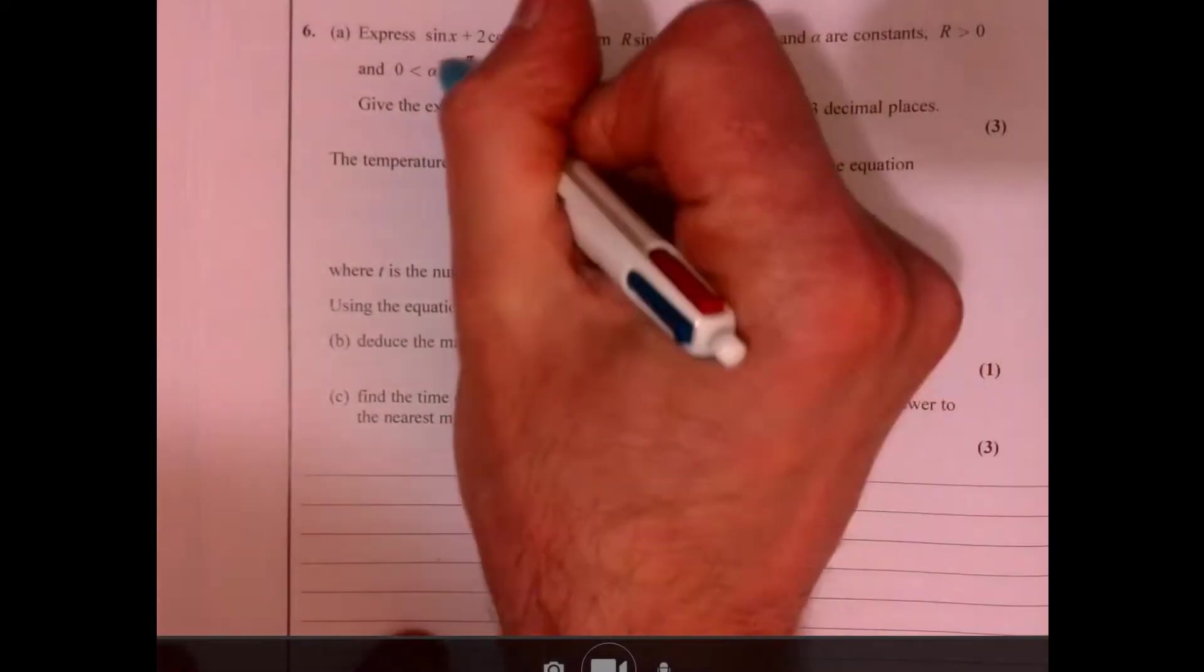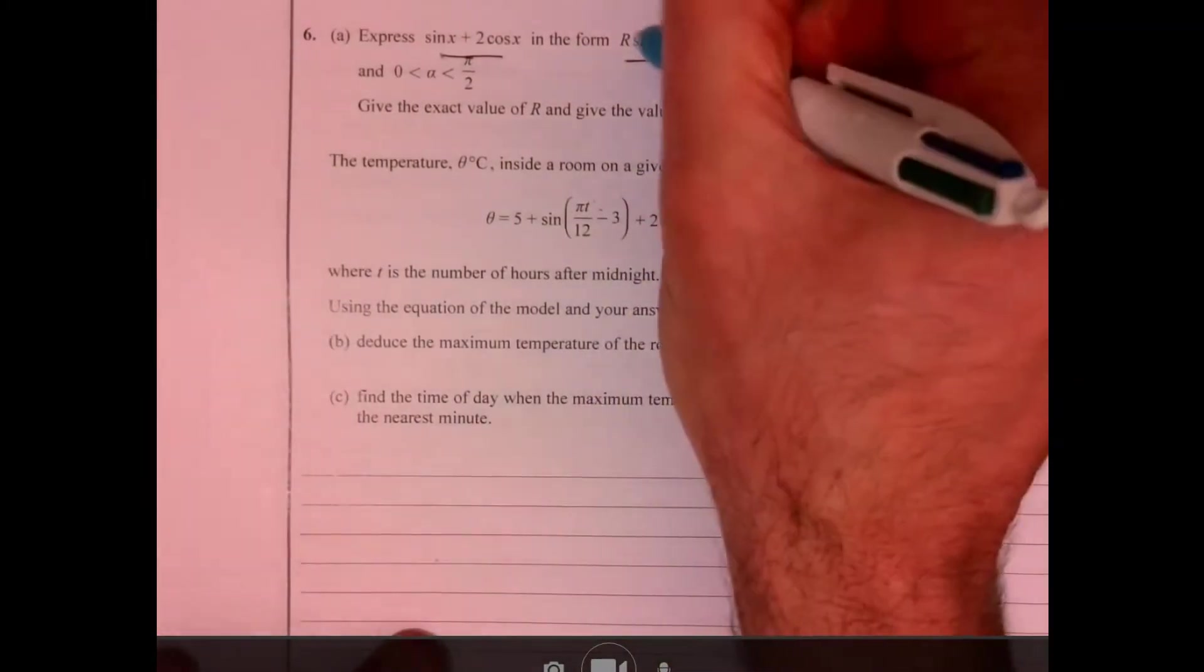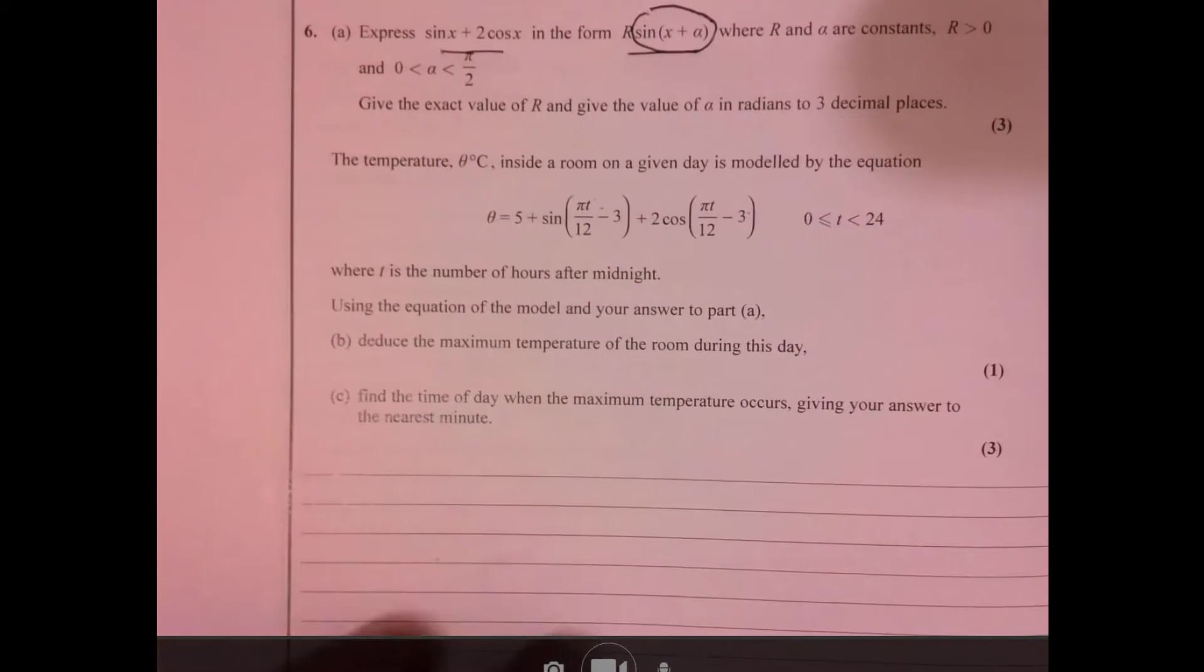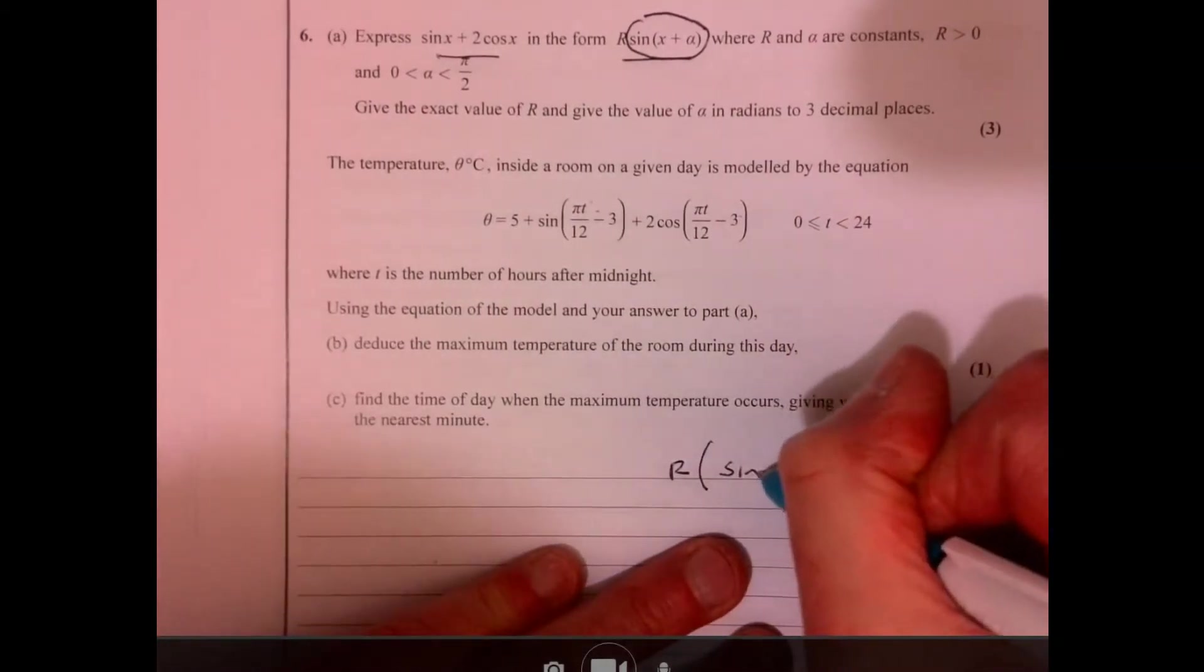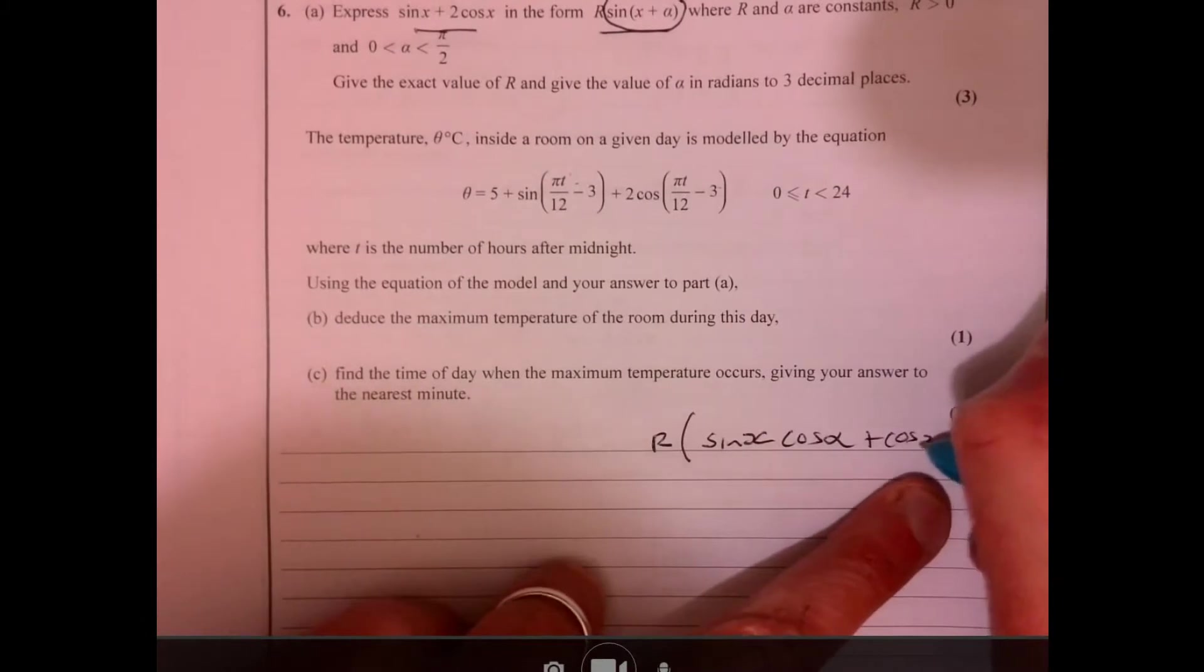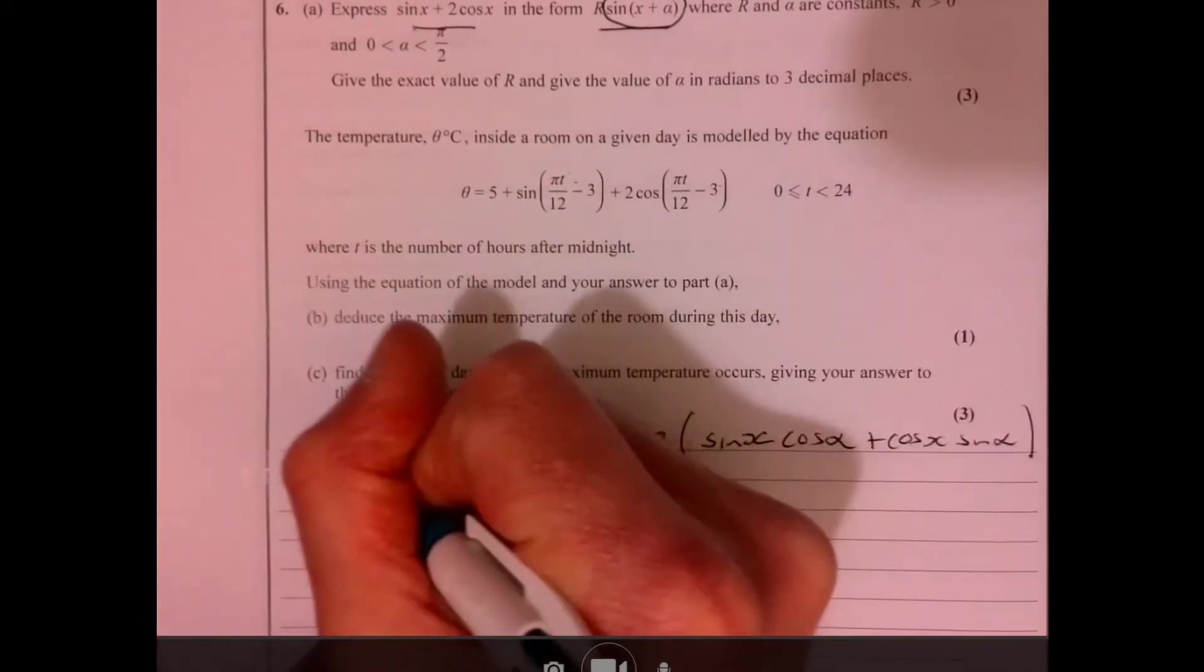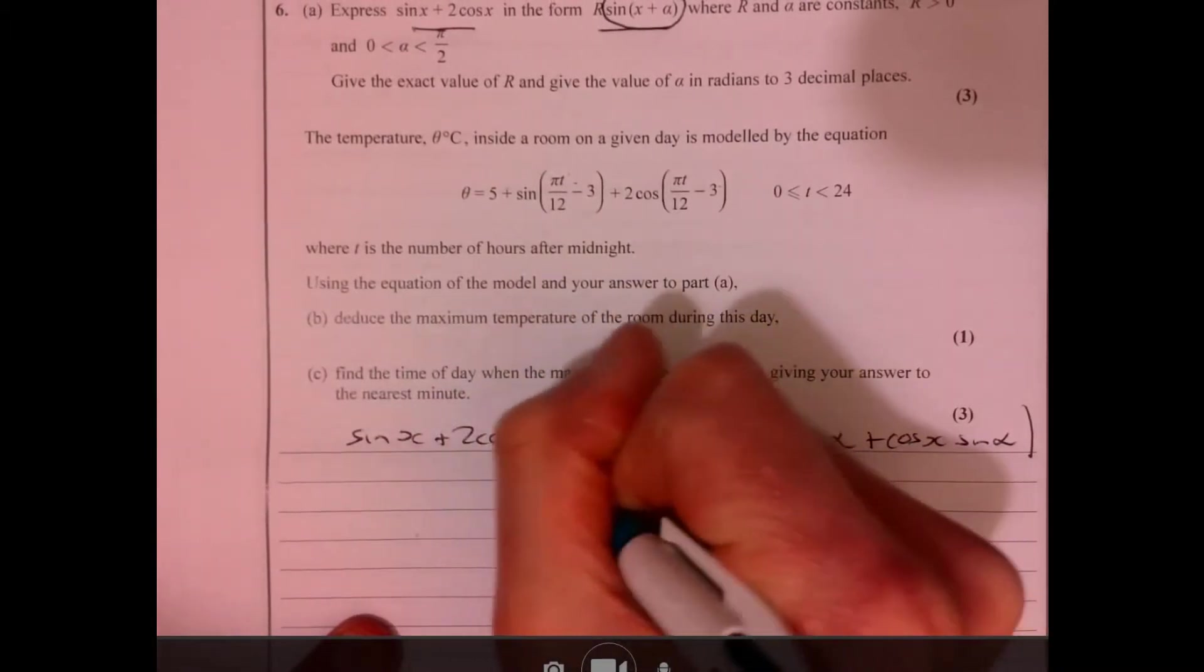Right, question six. We need to write this using the addition formula. If I expand that bit, that gives me r, and that's going to give me sine x cos alpha plus cos x sine alpha.